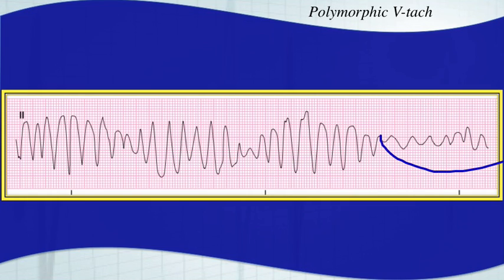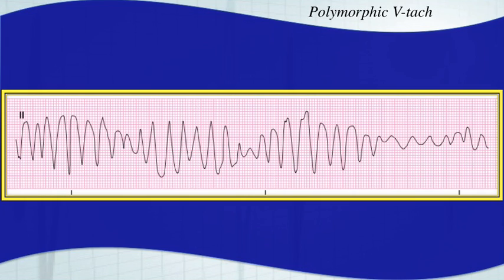If you see how it ends here, it's looking like it's going into a coarse V-fib. Torsades is almost always caused by a prolonged QT interval, so that is a much more specific type of polymorphic VTAC.